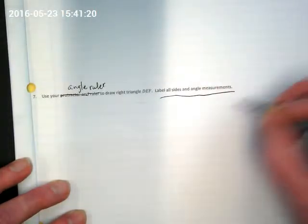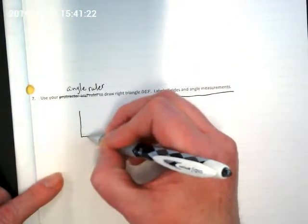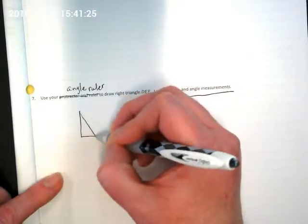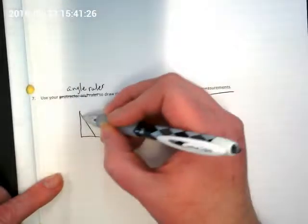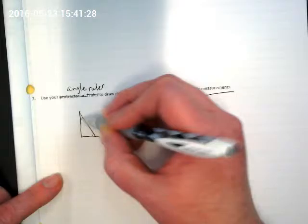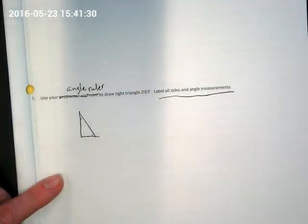And instead of using your protractor, you're going to use your angle ruler, which does the same work as a protractor. Your angle ruler. To draw a right triangle DEF, make sure you're labeling all sides and angle measurements.